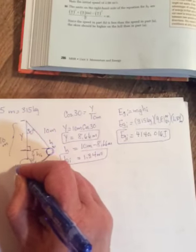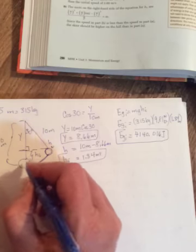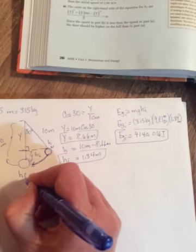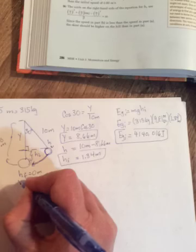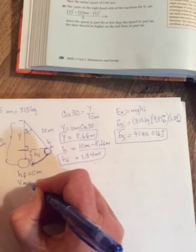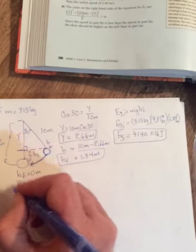So when it gets to the lowest part of its swing before it starts to go back up, down here, its height is zero, so it has no gravitational potential energy, but its speed is maximum, which means all of its energy must be kinetic.